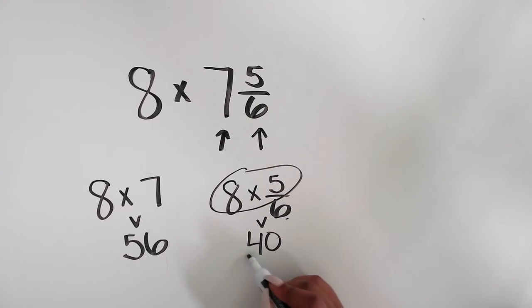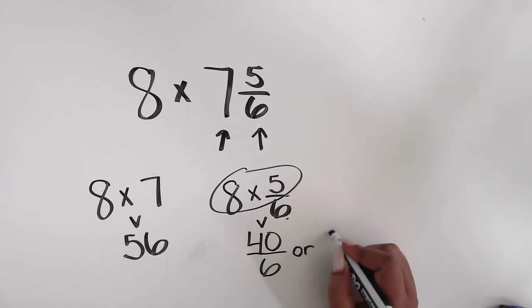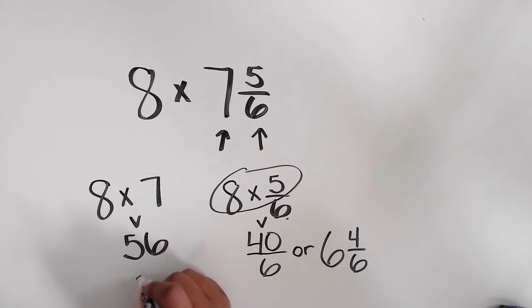So this product is 40/6. And now you have another fraction greater than 1 can convert before adding it together with that whole number. 40/6 converts to the mixed number 6 and 4/6.